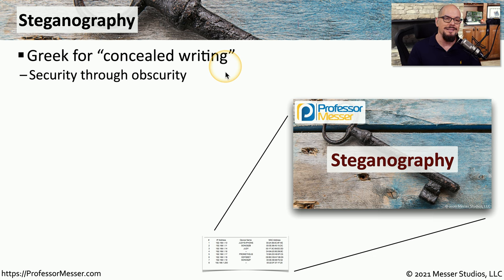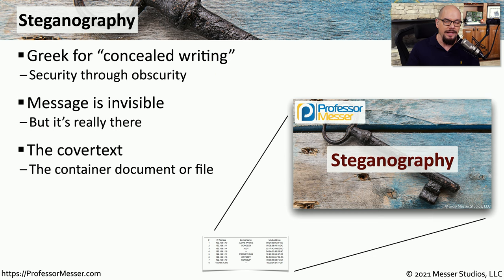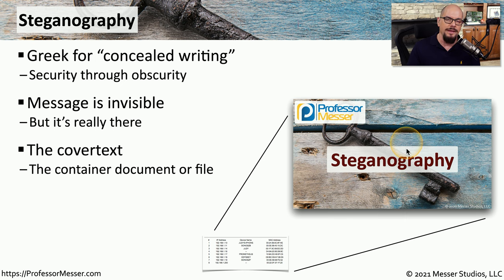Because of that, we refer to this as security through obscurity, because this is not a truly secure method. Although this message is invisible to the human eye, there really is a message inside of the image. We refer to the container that holds this message as the cover text. So in this example, the graphic used on this particular view is the cover text, and inside of that graphic is some additional hidden data.